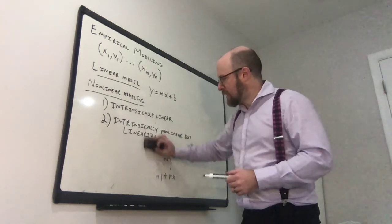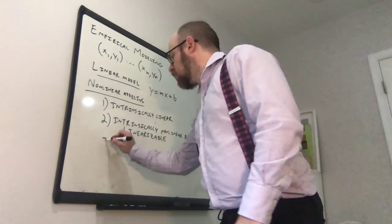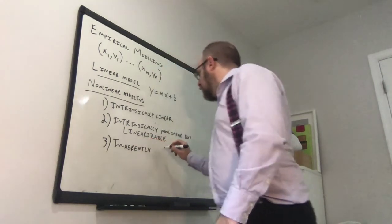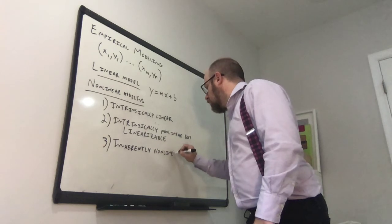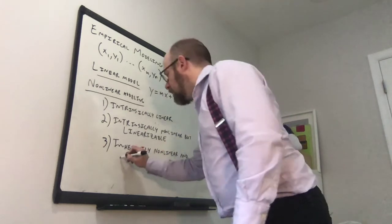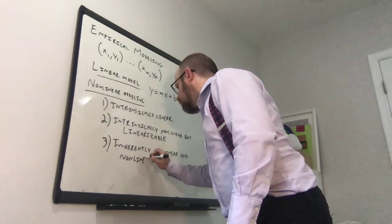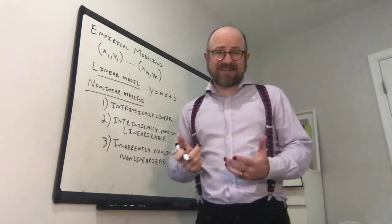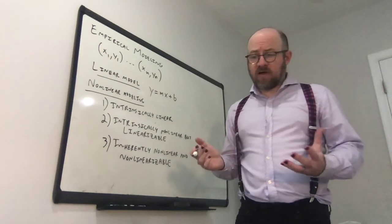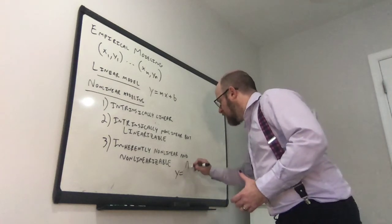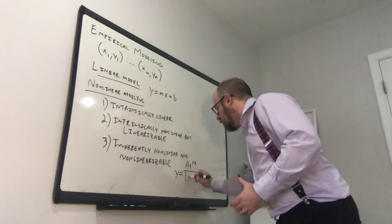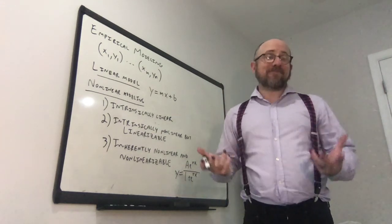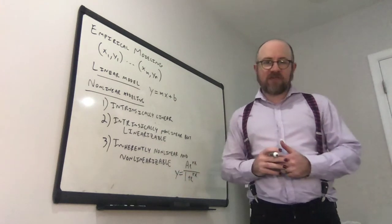The third category, which includes things like logistic functions, logistic equations, are inherently nonlinear and non-linearizable. And so like I said, the logistic equation is an example like this. There's no way to take like a logarithm of the logistic equation y equals ae to the rx over 1 plus e to the rx. That's the equation for logistic growth. You can't make that linear in any way. And so fitting that is more of a challenge.